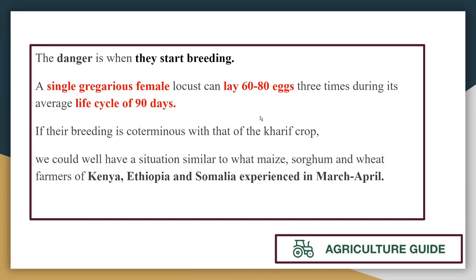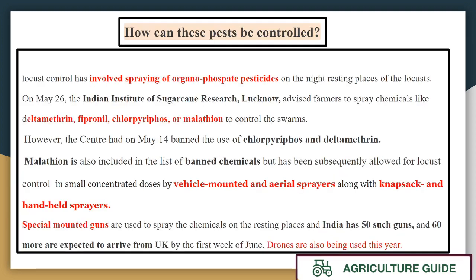A single female locust, in its 90-day life cycle, can lay 60–80 eggs up to 3 times. If breeding continues alongside the kharif crop, we may face the same situation as the farmers of Kenya, Ethiopia, and Somalia experienced in March and April, where crops like maize, sorghum, and wheat were devastated.